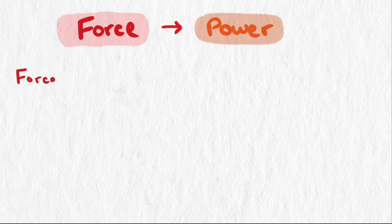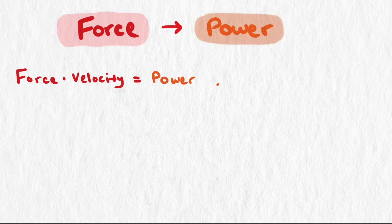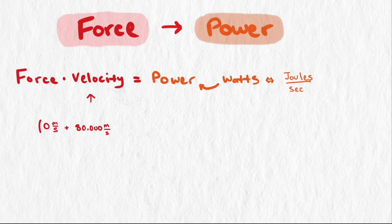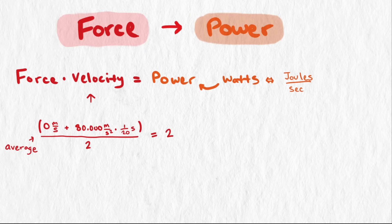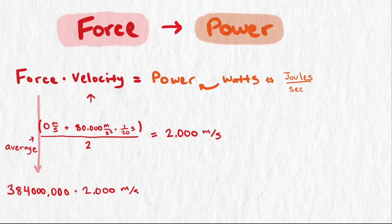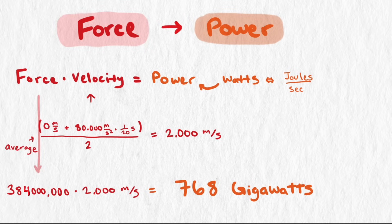To find the average power output needed to generate that force, we multiply by the average velocity, since power equals force times velocity. One watt is equivalent to a joule of work every second, or enough power to lift one pound up nine inches every second. Using our calculated acceleration of 80,000 m/s² over the first 1/20th of a second gives an average velocity of 2,000 meters per second. So our average power output is 384 million newtons × 2,000 m/s = 768 billion watts, or 768 gigawatts.